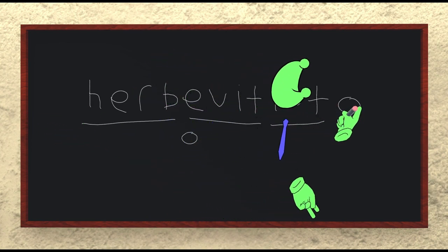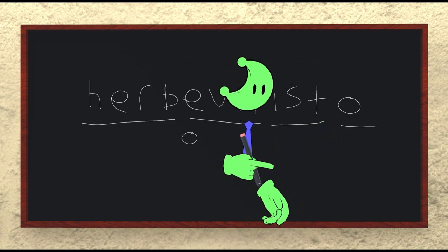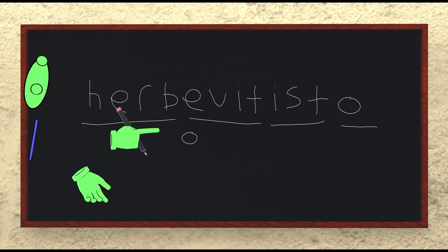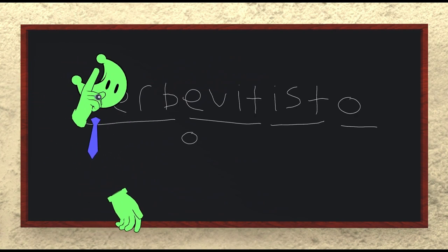Lastly, as I mentioned, O is how many nouns in Esperanto end. So, bringing it all together, Herbevitisto means chronically online.